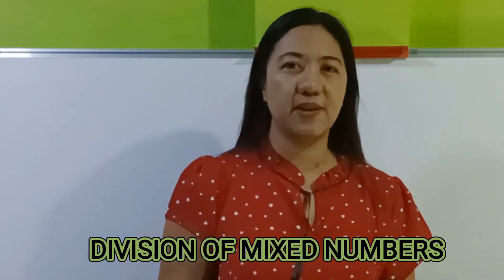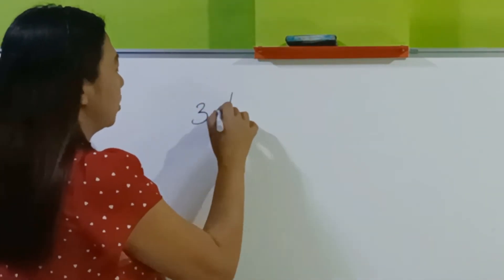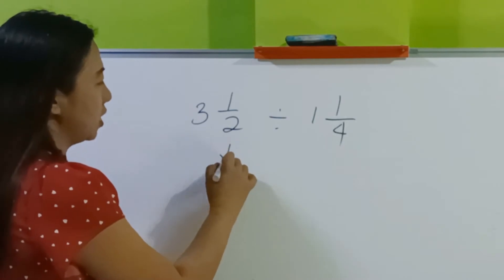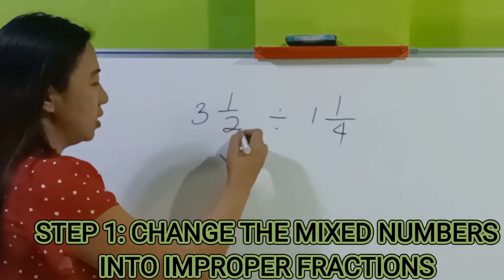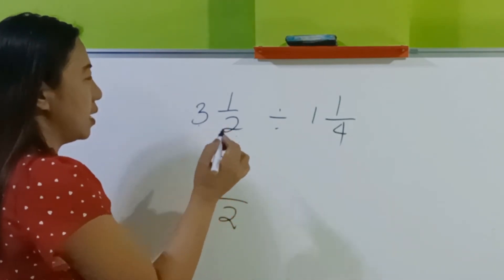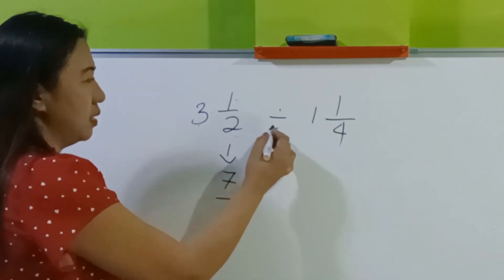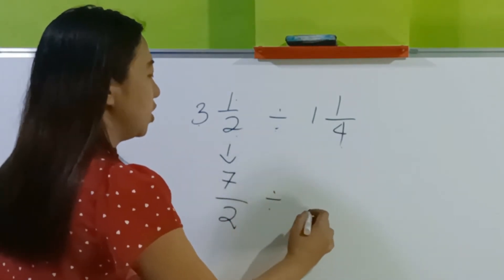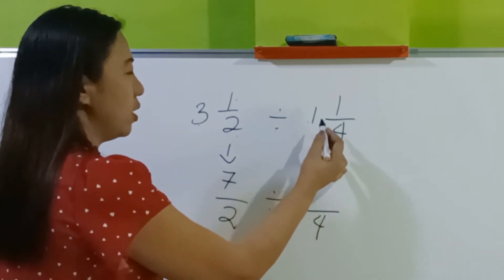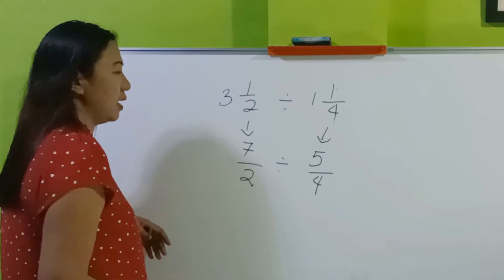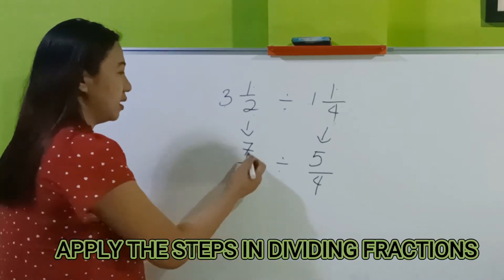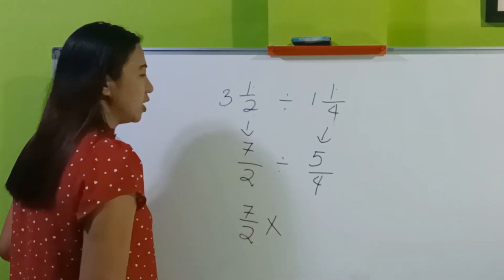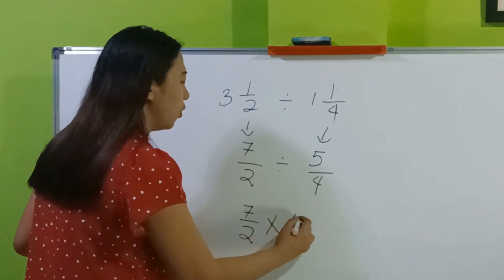How about division of mixed numbers? Let's see: 3 and 1 half divided by 1 and 1 fourth. Let's do the long cut. Change this into an improper fraction: 2 times 3 is 6, plus 1 is 7, so 7 halves. Change the second one: 4 times 1 is 4, plus 1 is 5, so 5 fourths. Then 7 halves times the reciprocal of 5 fourths, which is 4 fifths.